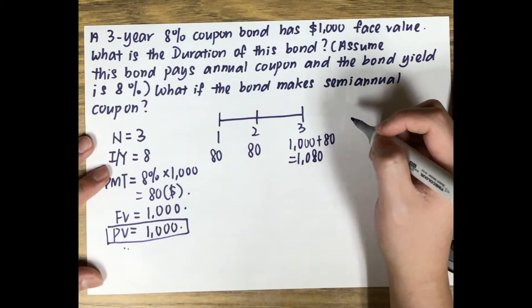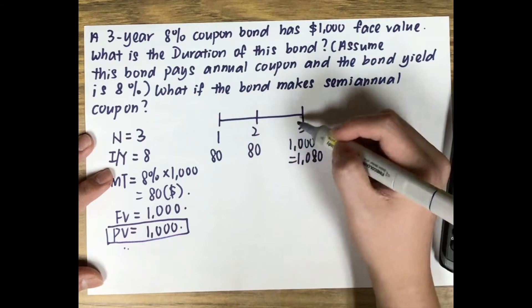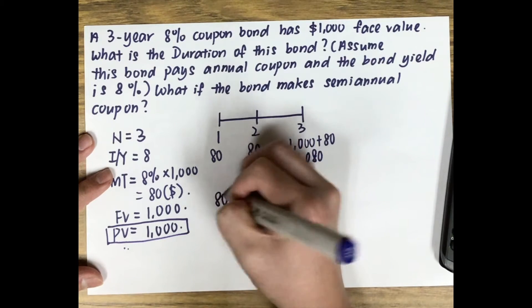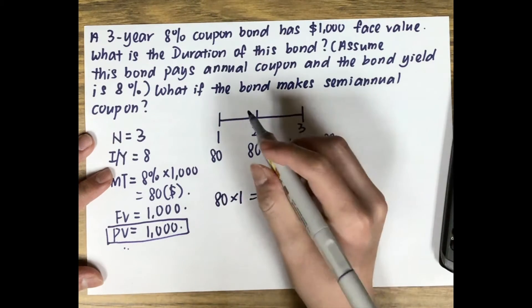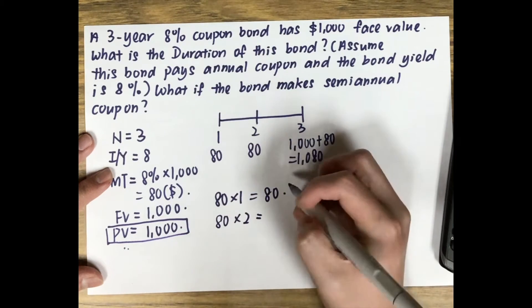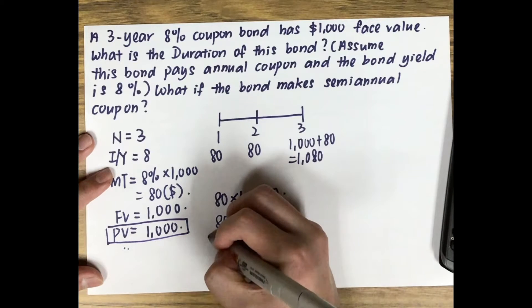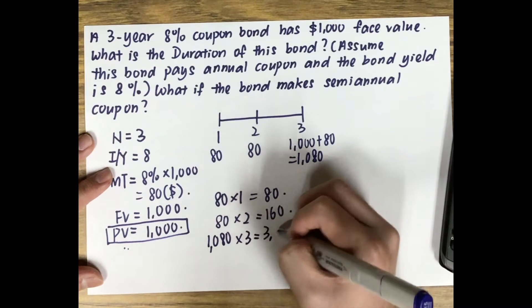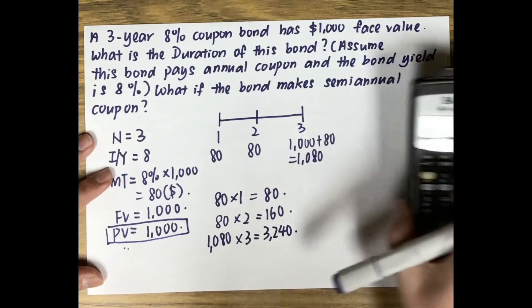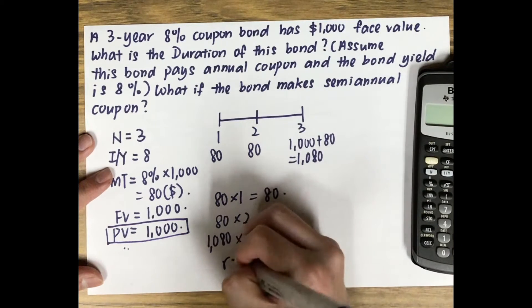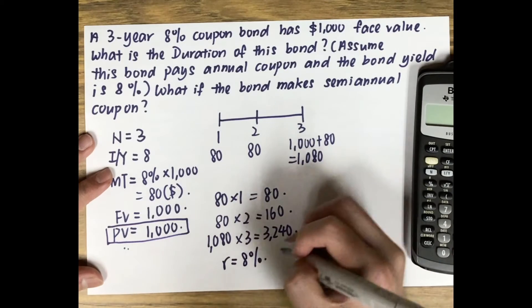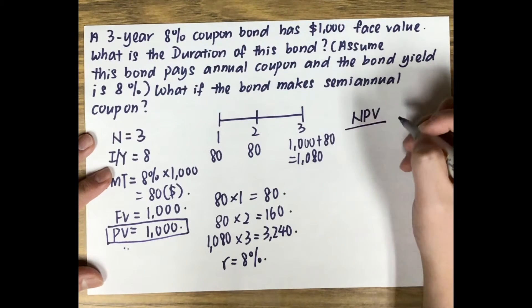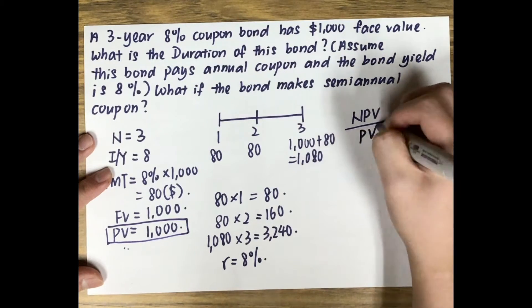To calculate duration, we multiply each cash flow by its period. In year one: $80 × 1 = $80. In year two: $80 × 2 = $160. In year three: $1,080 × 3 = $3,240. The yield to maturity is 8%, so we calculate the NPV of these weighted cash flows and divide by the present value.